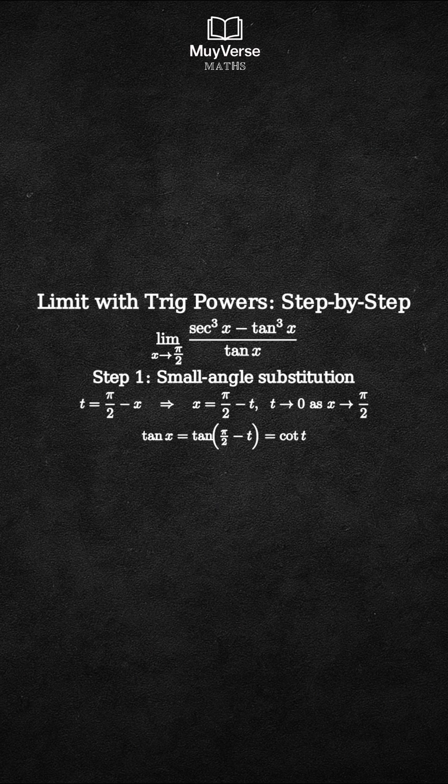So tan(x) = tan(π/2 - t) which is cot(t). Also, sec(x) = 1/cos(x) = 1/cos(π/2 - t), which is 1/sin(t), that is csc(t).